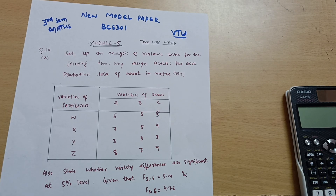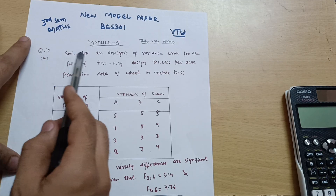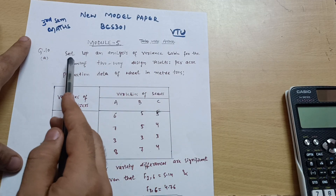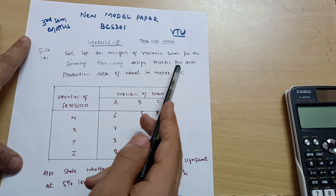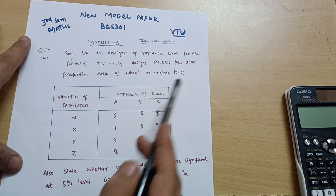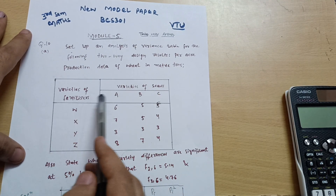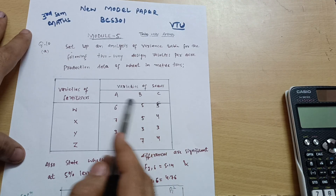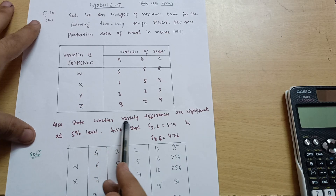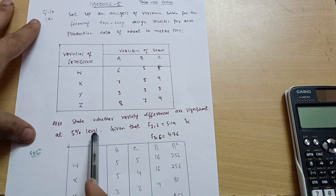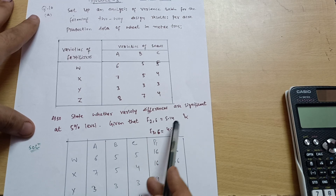Welcome back. In this video I will discuss a two-way ANOVA problem — analysis of variance for a two-way design. The data given is per-acre production of wheat in metric tons, covering varieties of fertilizers and varieties of seeds. We need to state whether variety differences are significant at the 5% level, given that F(2,6) = 5.14.